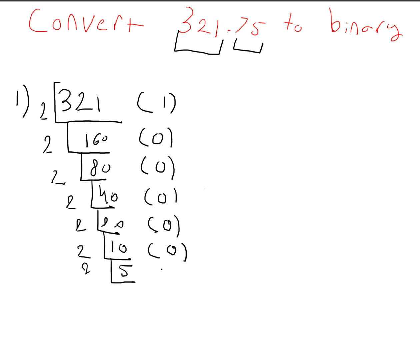And then 5. 5 doesn't work out nicely. We're going to get 2.5. So you're going to put a 1 to represent that, and you're going to put the 2 down here, divide this by 2, and then that works out nicely until we get all the way down to 1.